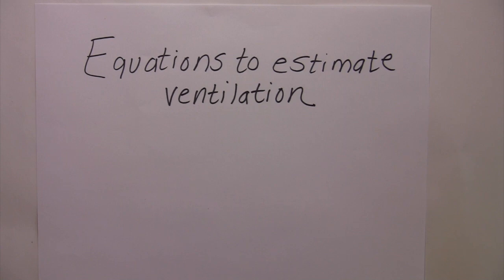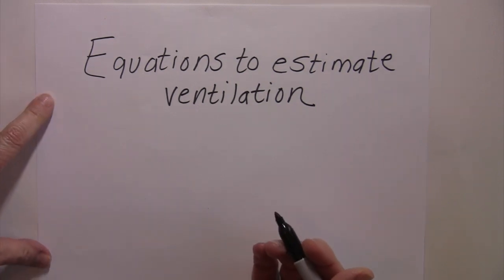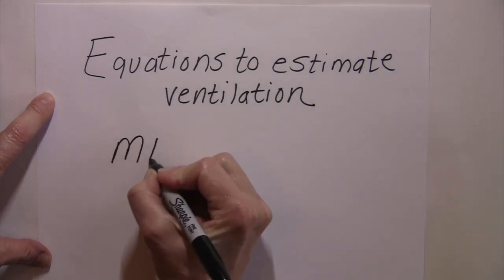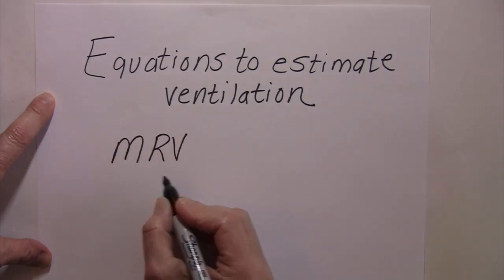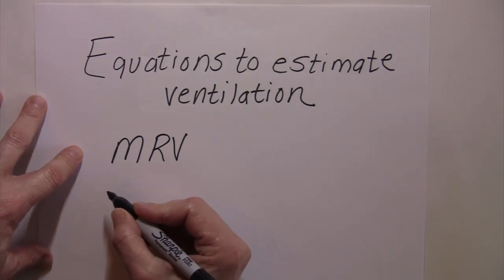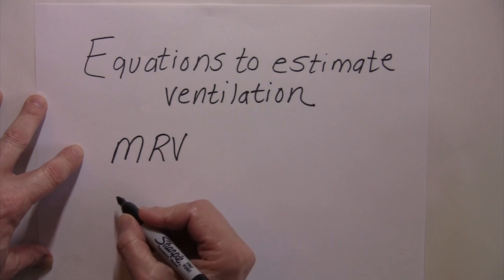Let's take a look at two equations that are used to estimate ventilation. One is called minute ventilation, or it's also known as the minute respiratory volume. And all the minute respiratory volume is, is the amount of air that we bring into the respiratory tract per minute.